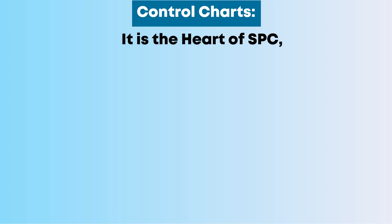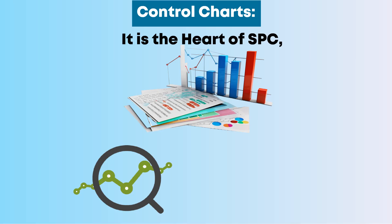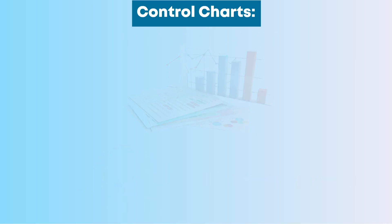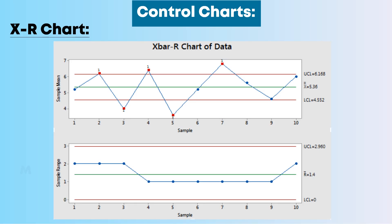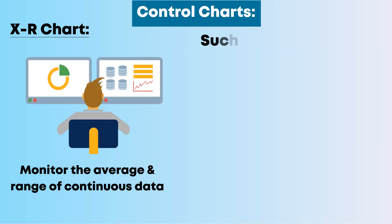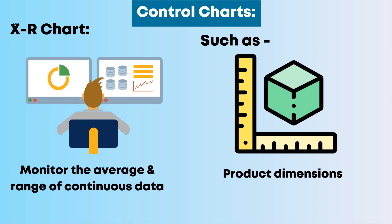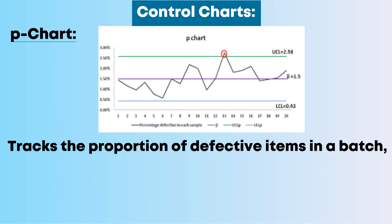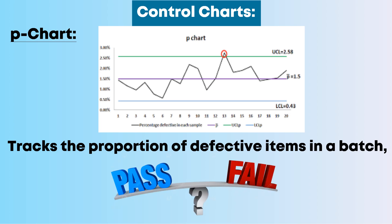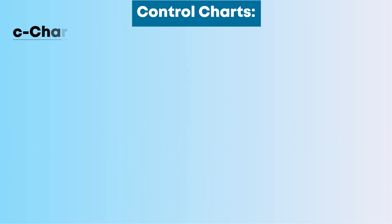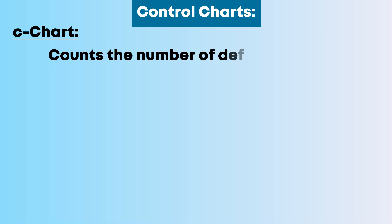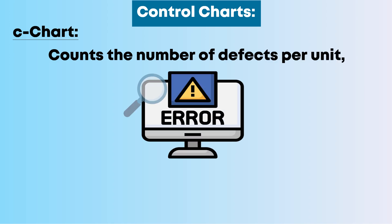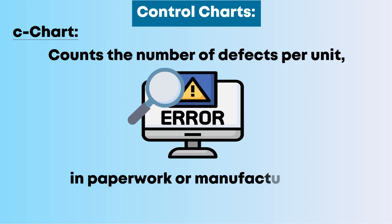Control Charts are the heart of SPC. These are visual tools that help track process data over time and highlight variations. Common types include: the X-R chart, used to monitor the average and range of continuous data such as product dimensions; the P chart, which tracks the proportion of defective items in a batch, useful for pass or fail inspections; and the C chart, which counts the number of defects per unit, ideal for tracking errors in paperwork or manufacturing.